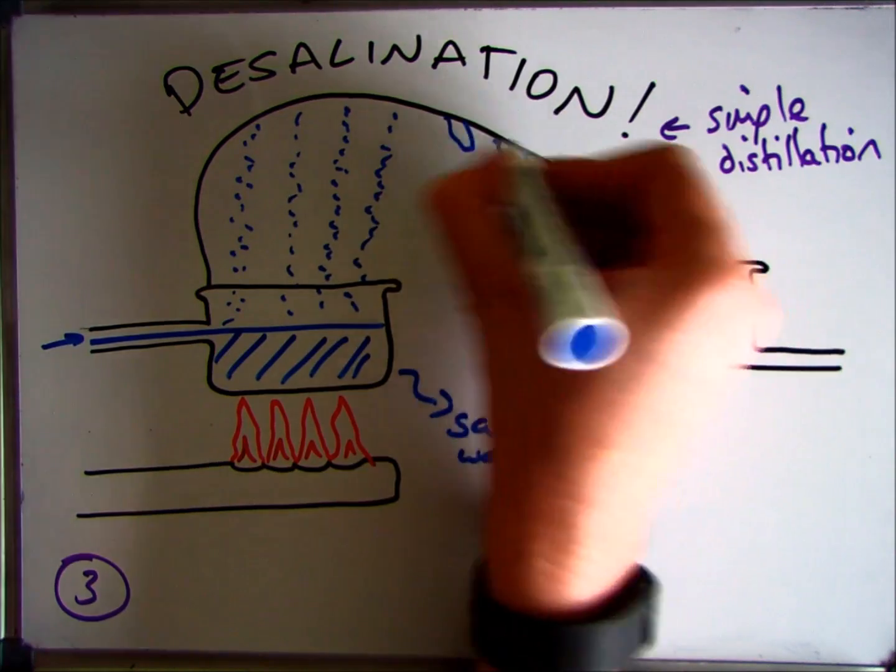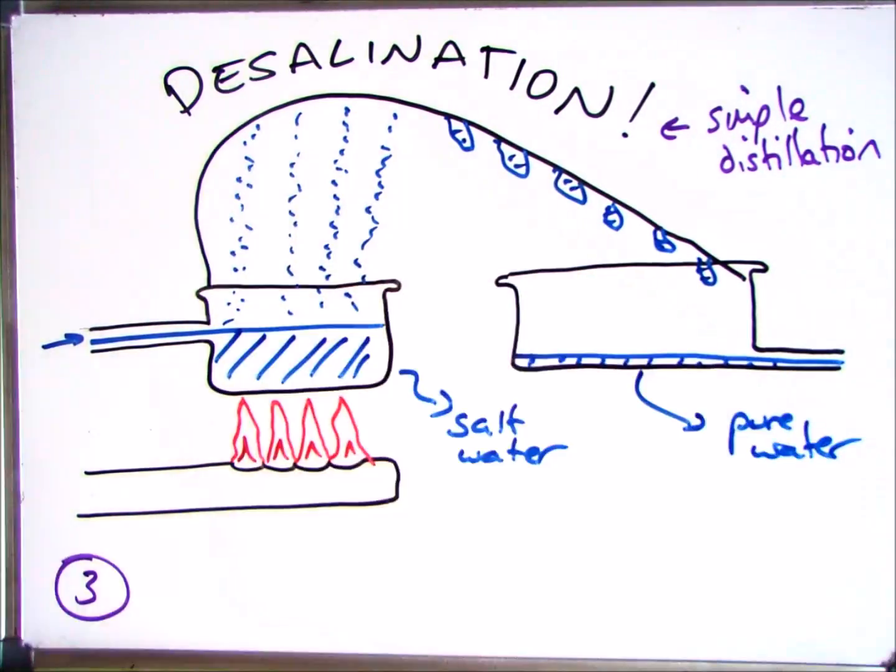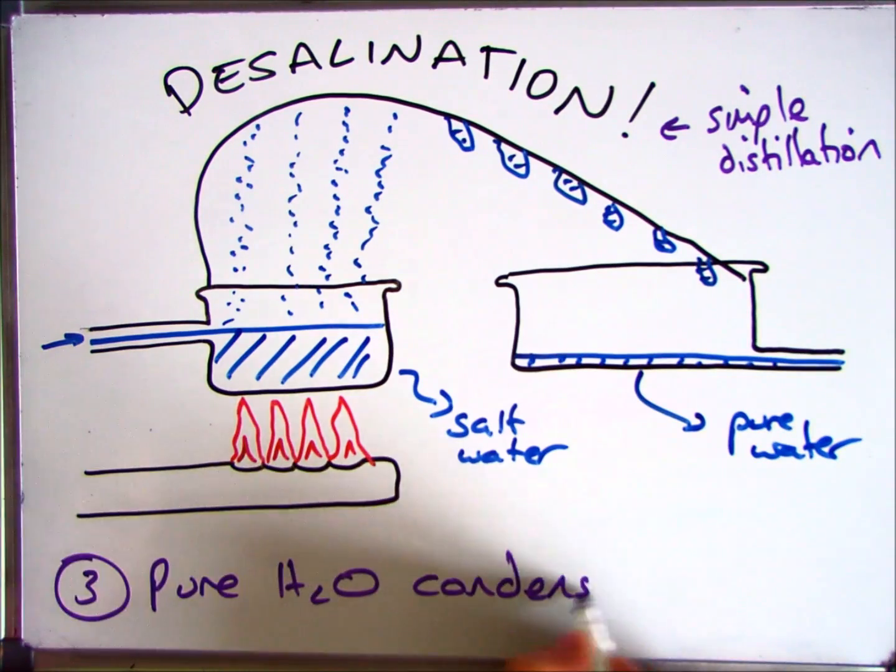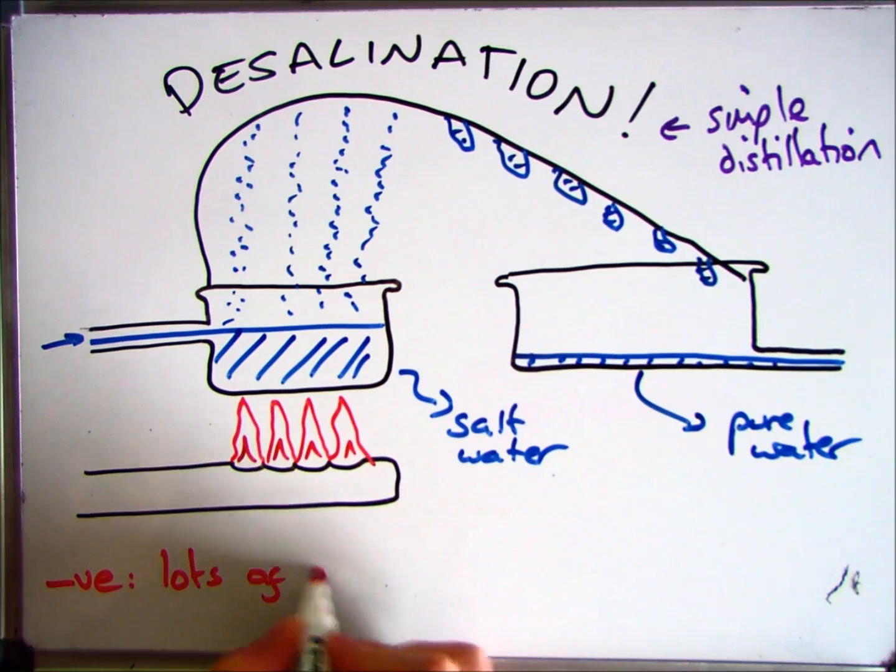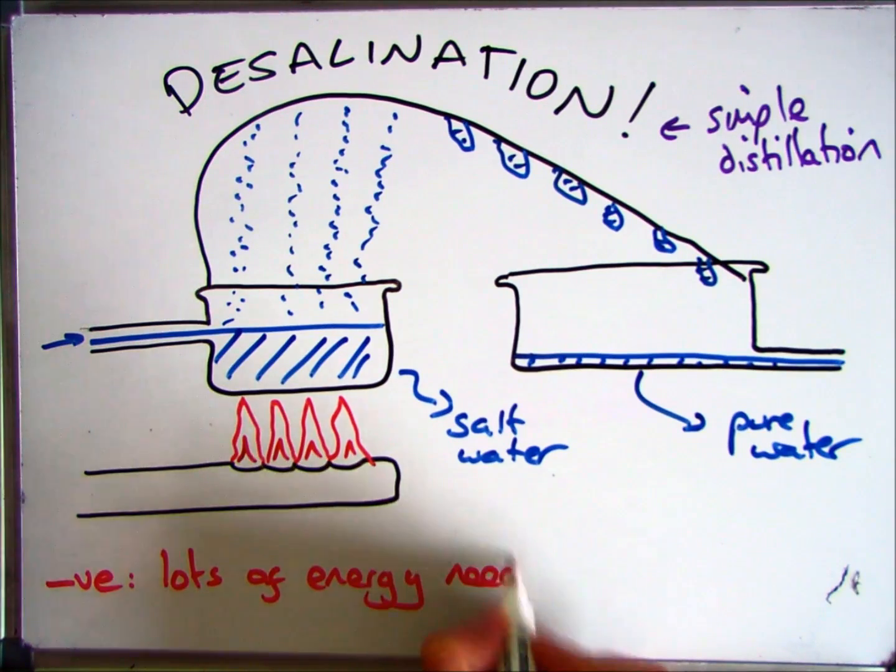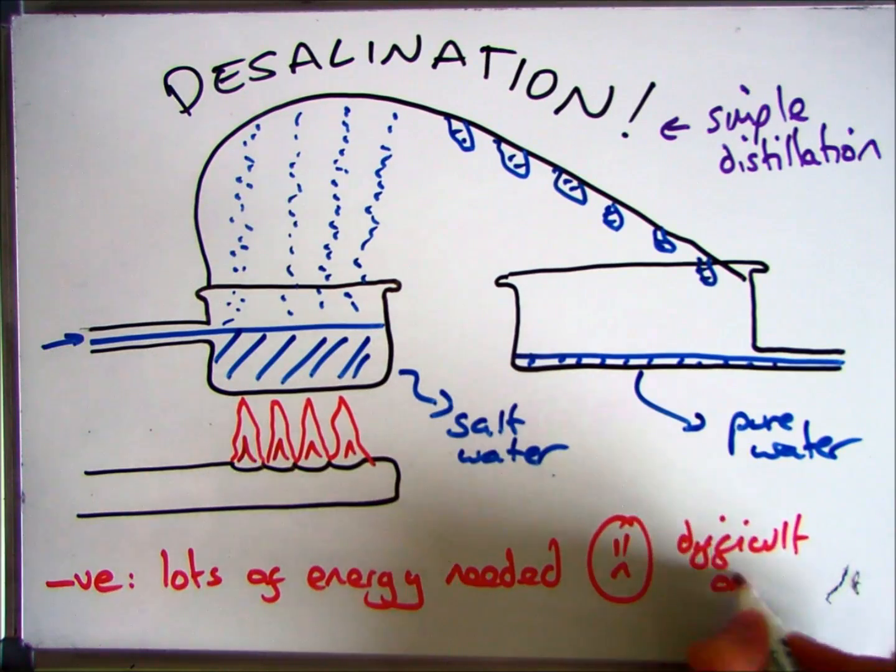And then finally you need to have something to collect the water so it can start to condense back down, and when you collect it, that will be pure water which is safe to drink. The major problem with this technique however is that lots of energy is needed for the process to be carried out. So you need to either do it in an area where there's an abundant supply of energy or you need to find a different technique.